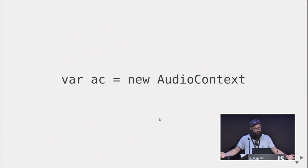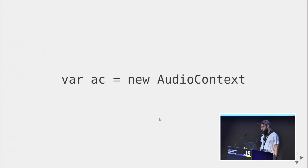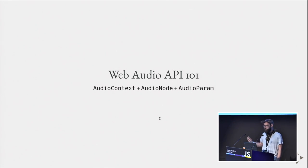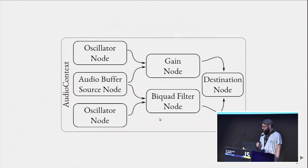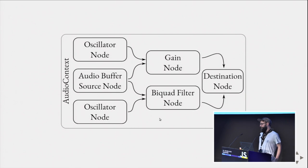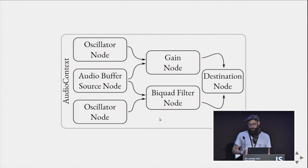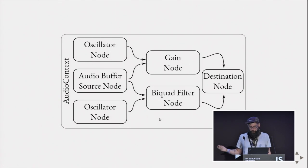Without further ado, let's introduce the audio context. From now on it's all JavaScript. You've got `var ac = new AudioContext()`. When you talk about the Web Audio API, there are three main concepts: an audio context, audio nodes, and audio params. You connect nodes together using the connect call — if you connect an oscillator node to a gain node, you apply the gain node's processing. Connect something to the destination node and you hear it in your speakers.